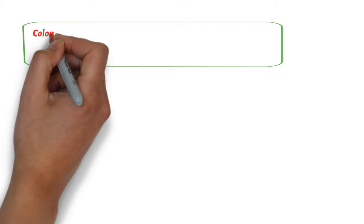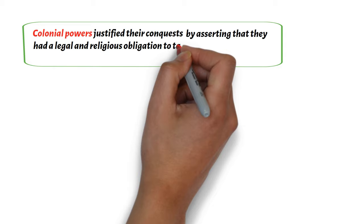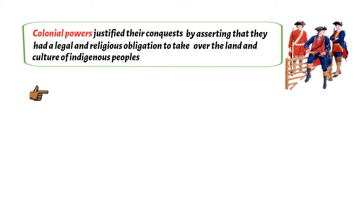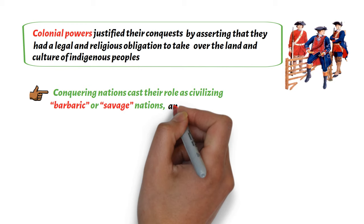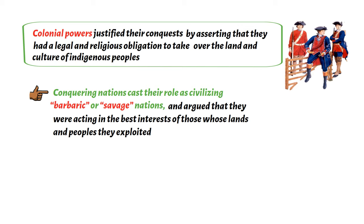Colonial powers justified their conquests by asserting that they had a legal and religious obligation to take over the land and culture of indigenous peoples. Conquering nations cast their role as civilizing barbaric or savage nations, and argued that they were acting in the best interests of those whose lands and peoples they exploited.